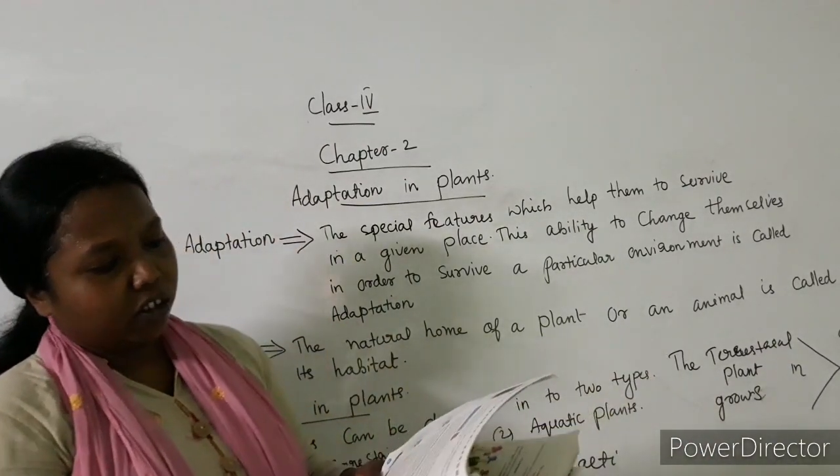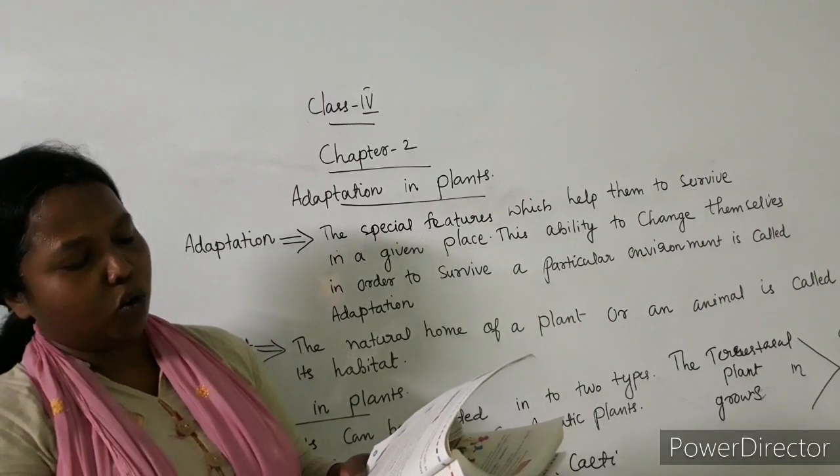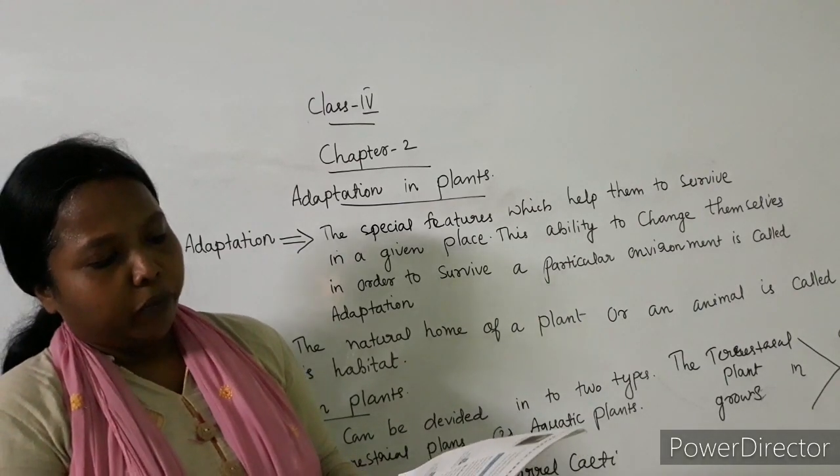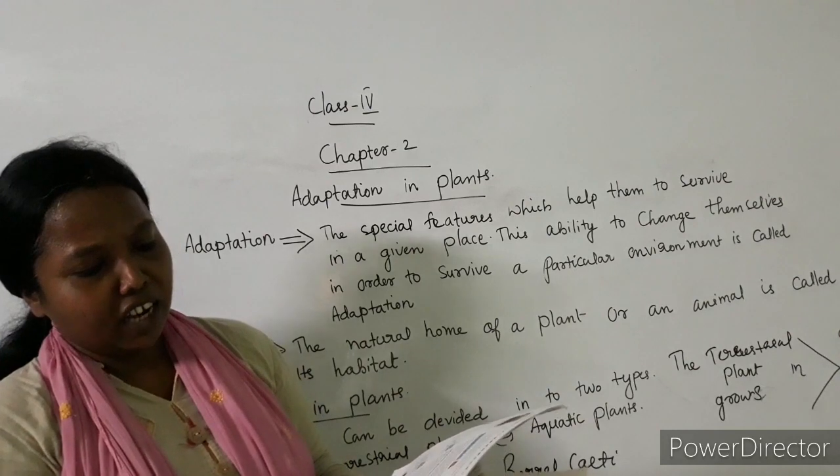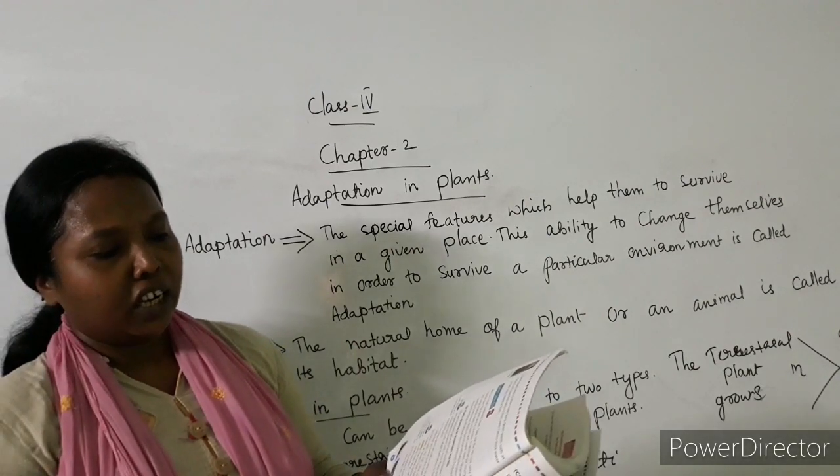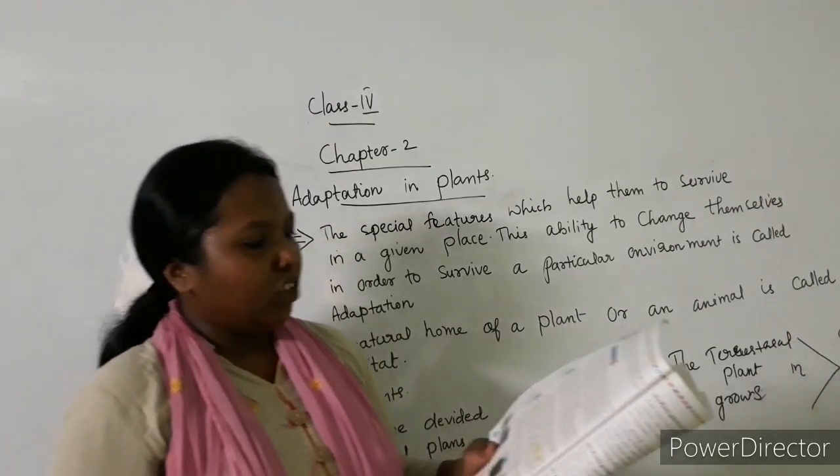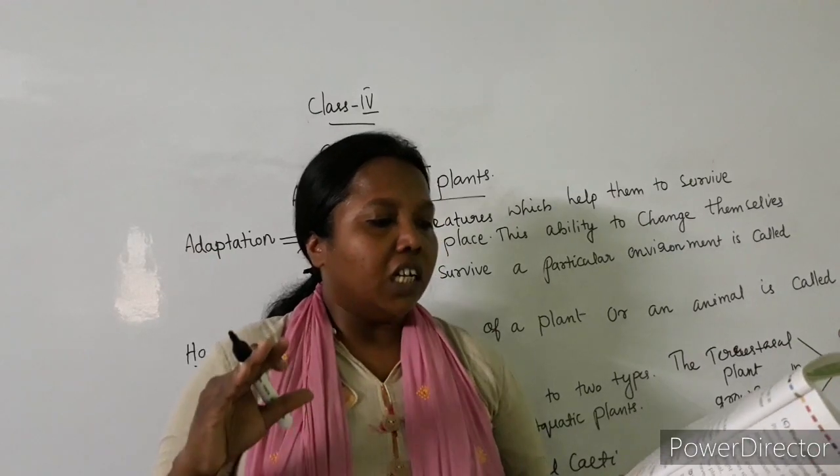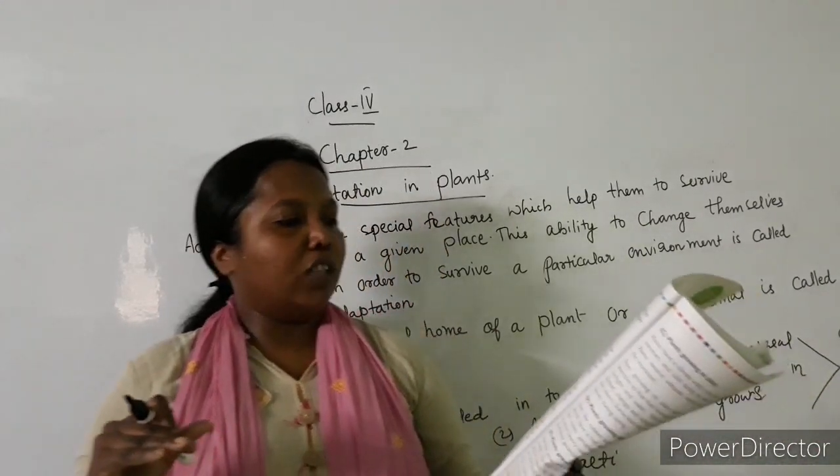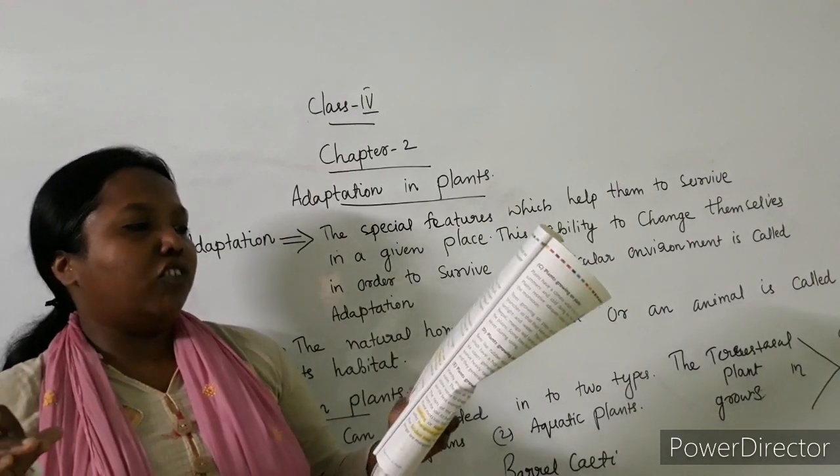The cones protect the seeds inside them from extreme cold. Pine, spruce, cedar and fir are examples of conifer trees. The branches of conifer trees slope downwards so that the snow does not collect on the leaves and branches.